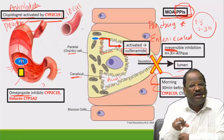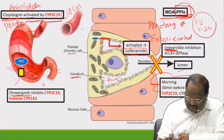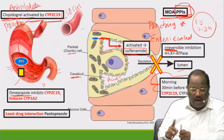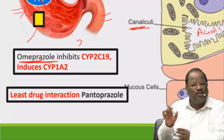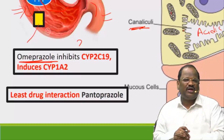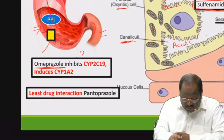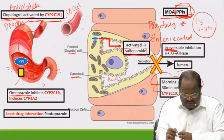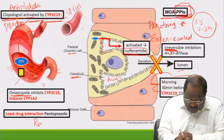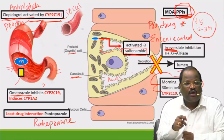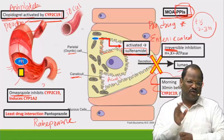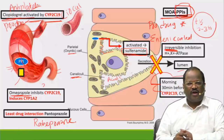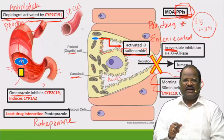Among the proton pump blockers, pantoprazole does not interfere with the activation of clopidogrel. So the MCQ answer: the proton pump blocker that does not have a drug interaction with clopidogrel is pantoprazole. If pantoprazole is not an option, the next choice is rabeprazole.